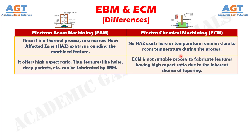Difference number 12: Electron beam machining offers a high aspect ratio. Thus features like holes, deep pockets, etc. can be fabricated by electron beam machining, whereas electrochemical machining is not a suitable process to fabricate features having high aspect ratio due to the inherent chance of tapering.